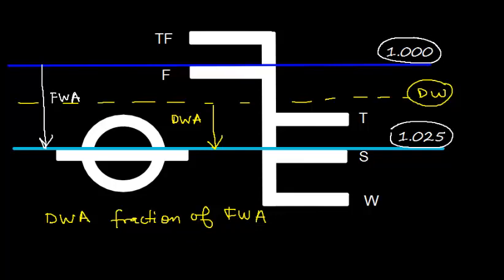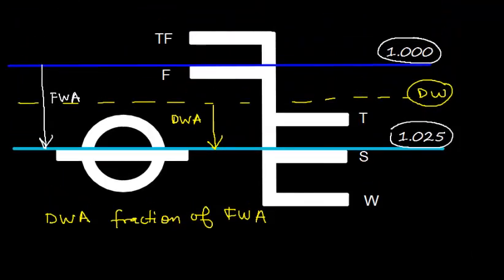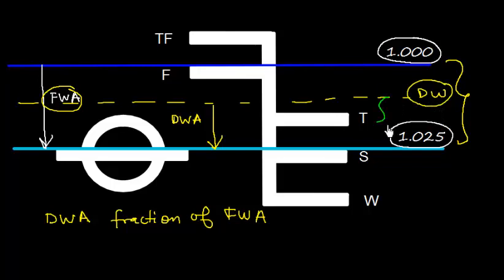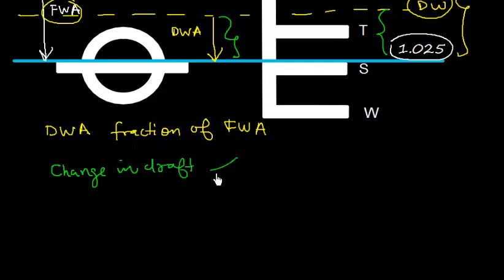This helps us calculate the draft. If the difference between fresh water and salt water gives us fresh water allowance, and the difference between dock water and salt water gives us dock water allowance, then the change in draft is directly proportional to the change in relative densities, or densities.